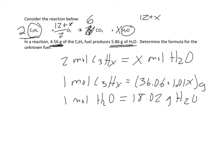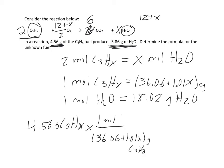So I have 4.56 grams of C3HX. And I know it produces this much water. So I have to get from grams of C3HX to grams of water. So the first thing I do, I have the molar mass of C3HX. So 36.06 plus 1.01X grams of C3HX over 1 mole of C3HX.